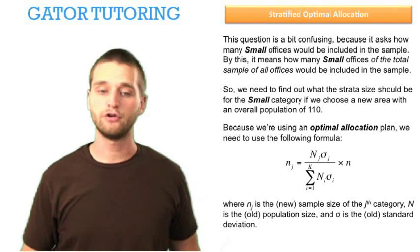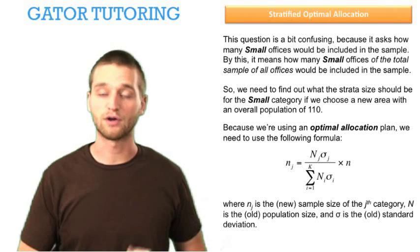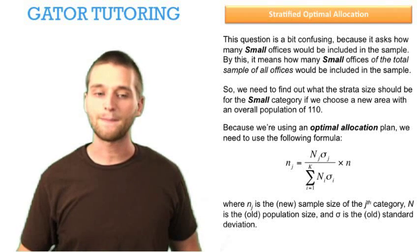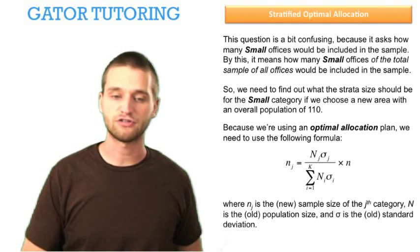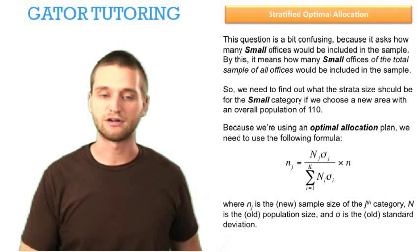where n sub j is the new sample size of the jth category, the one we're trying to find, capital N is the old population size, and sigma is the old standard deviation.